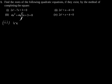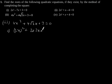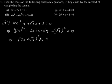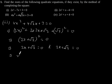Third part: 4x squared plus 4 root 3 times x plus 3 is equal to 0. This can be written as (2x) squared plus 2 times 2x times root 3 plus (root 3) squared equals 0, which implies (2x plus root 3) squared equals 0. This gives 2x plus root 3 equals 0 and 2x plus root 3 equals 0, so x equals minus root 3 by 2 (a repeated root).